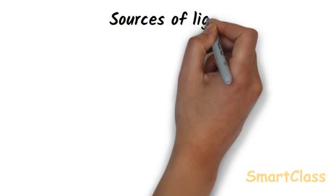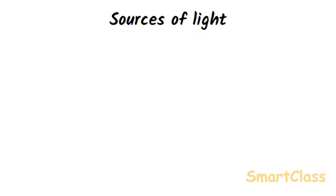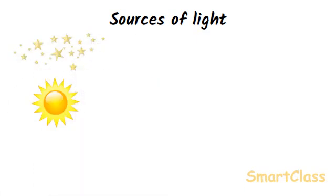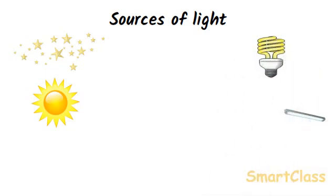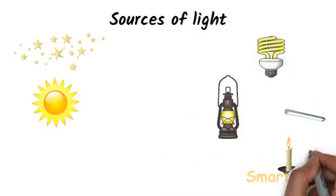Let us discuss the various sources of light. An object which gives out light is called the source of light. The various sources of light around us are sun, stars, electric bulb, tube light, kerosene oil lamp, candle, torch, fireflies, etc.